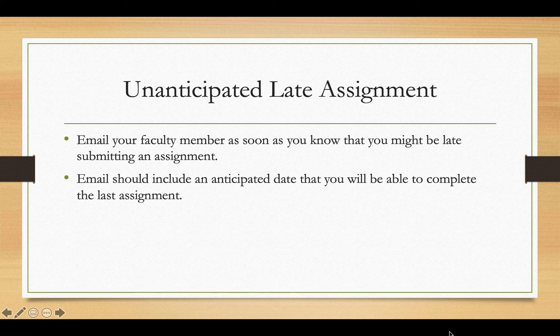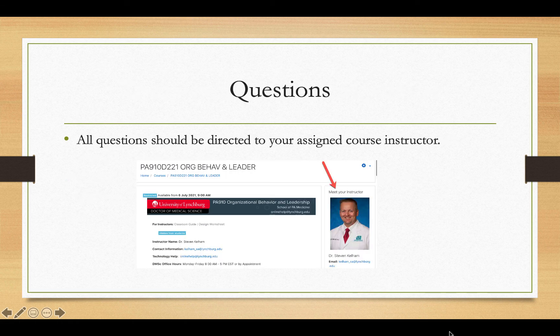For unanticipated late assignments — for example, if you had planned to post on Wednesday afternoon but were called into work unexpectedly — make sure you email your faculty member as soon as you know you might be late. In that email, include an anticipated new due date. Students are much more successful at keeping up with their work when they set a new due date immediately, and it prevents you from continuing to push the work off. Any questions should be directed to your course instructor, shown in the upper right-hand corner of your Moodle page.